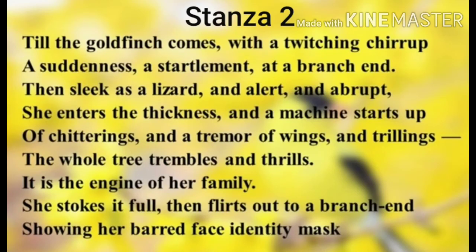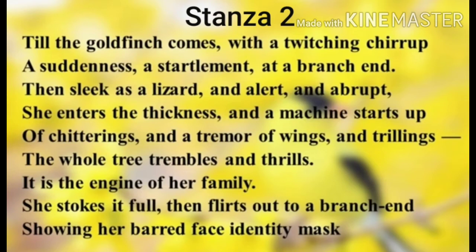In these lines, the poet says the silence of the tree is broken with the sudden arrival of the goldfinch bird. As soon as the bird arrives at the end of the branch with a twitching chirrup — referring to a sudden, quick movement and sound — the silence suddenly changes into noise and movement. She then abruptly enters the thickness of the branches just like a lizard. Thickness refers to the dense part of the tree. She is compared to a lizard because she is as quick and alert. Birds are very protective of their young ones and always keep an eye on their surroundings, and so is the goldfinch.